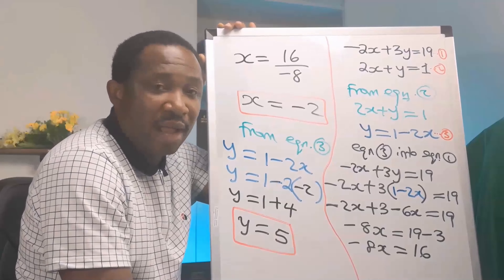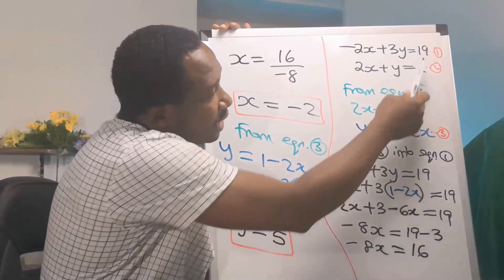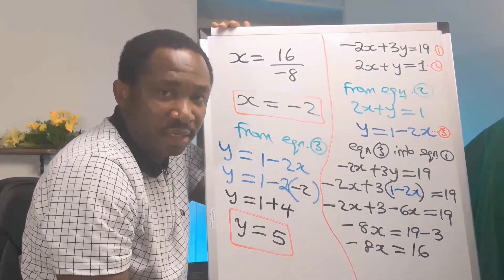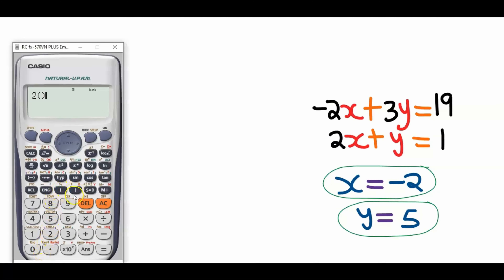Now that we have obtained x equals minus 2 and y equals 5, let's verify. Substituting into equation 1: minus 2x plus 3y — with x equals minus 2 and y equals 5 — we get 19. For equation 2: 2x plus y — with x equals minus 2 and y equals 5 — we get 1. Both equations check out.